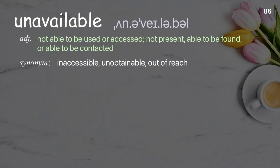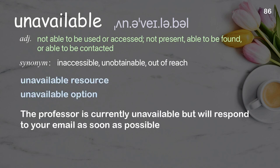Unavailable: not able to be used or accessed; not present, able to be found, or able to be contacted. Examples: unavailable resource, unavailable option. The professor is currently unavailable, but will respond to your email as soon as possible.